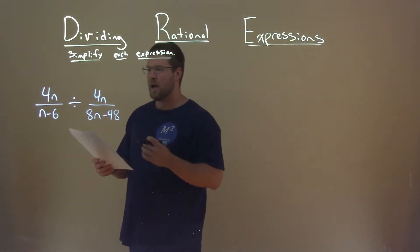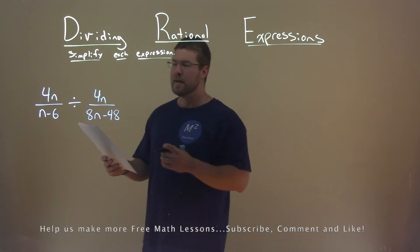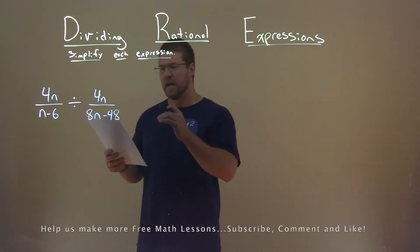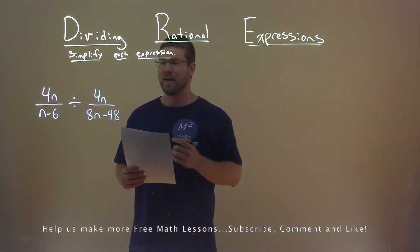We're given this problem right here, 4n divided by n minus 6, divided by 4n over 8n minus 48, and we need to simplify this expression.